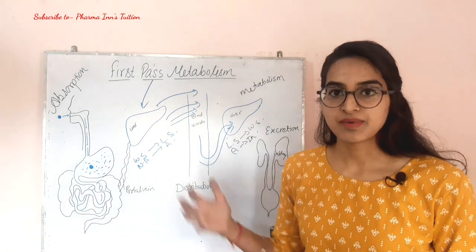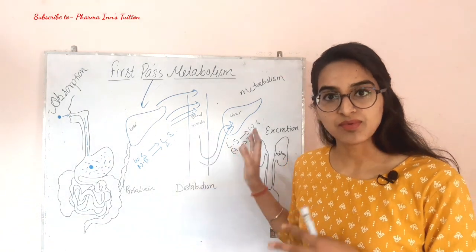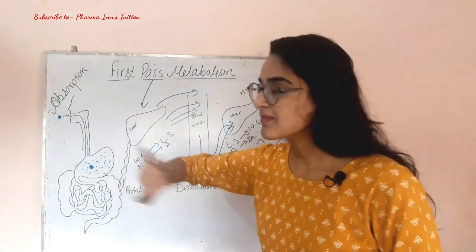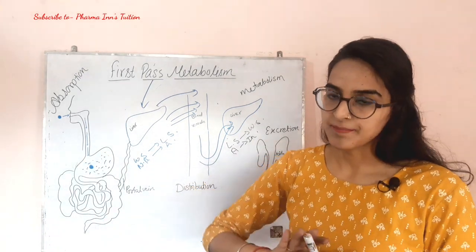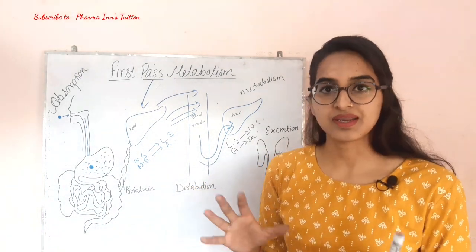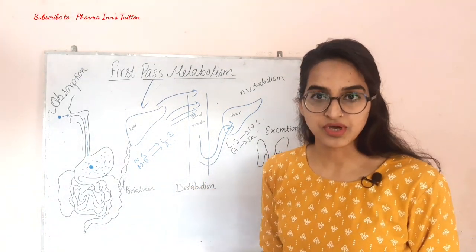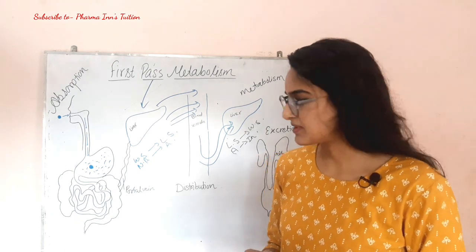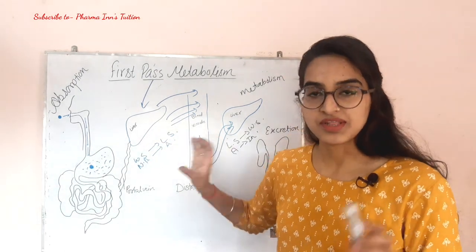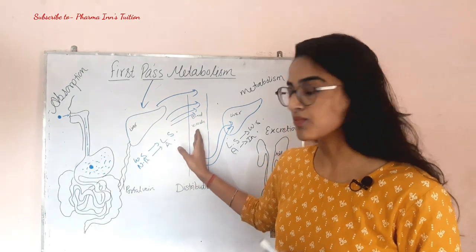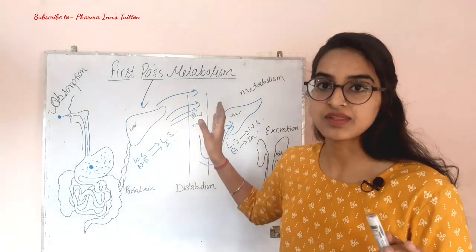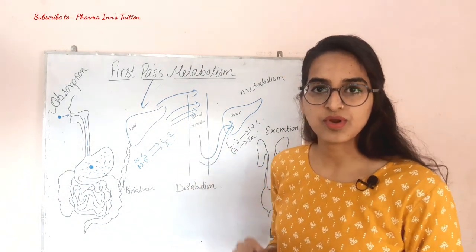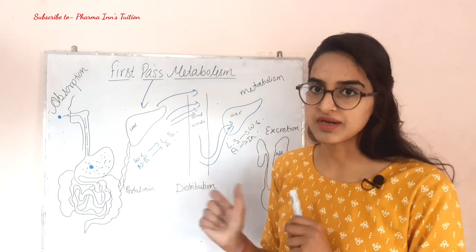If we talk about first-pass metabolism, it greatly affects bioavailability. Bioavailability is the rate and extent of a drug reaching the systemic circulation — meaning the amount of drug that actually enters the bloodstream and is available to produce an effect.